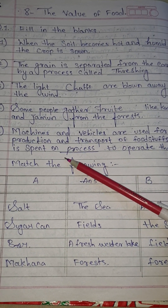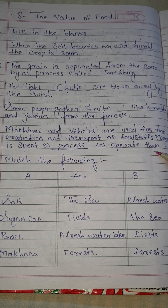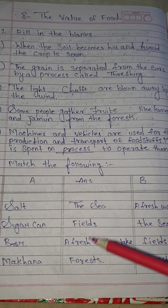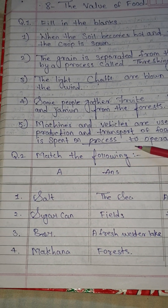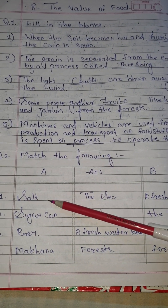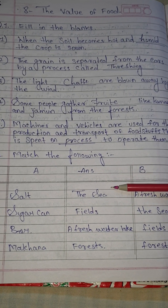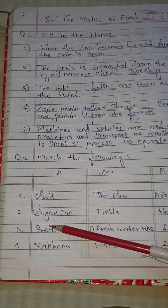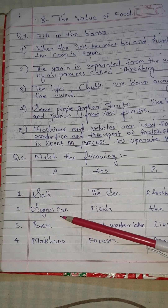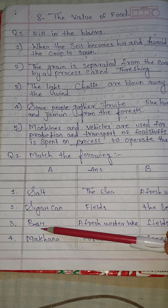Money is spent on dash to operate them. Answer: process. Question number 2: match the following. Column A answer in Column B. Number 1: salt — the sea. Number 2: sugarcane — fields.